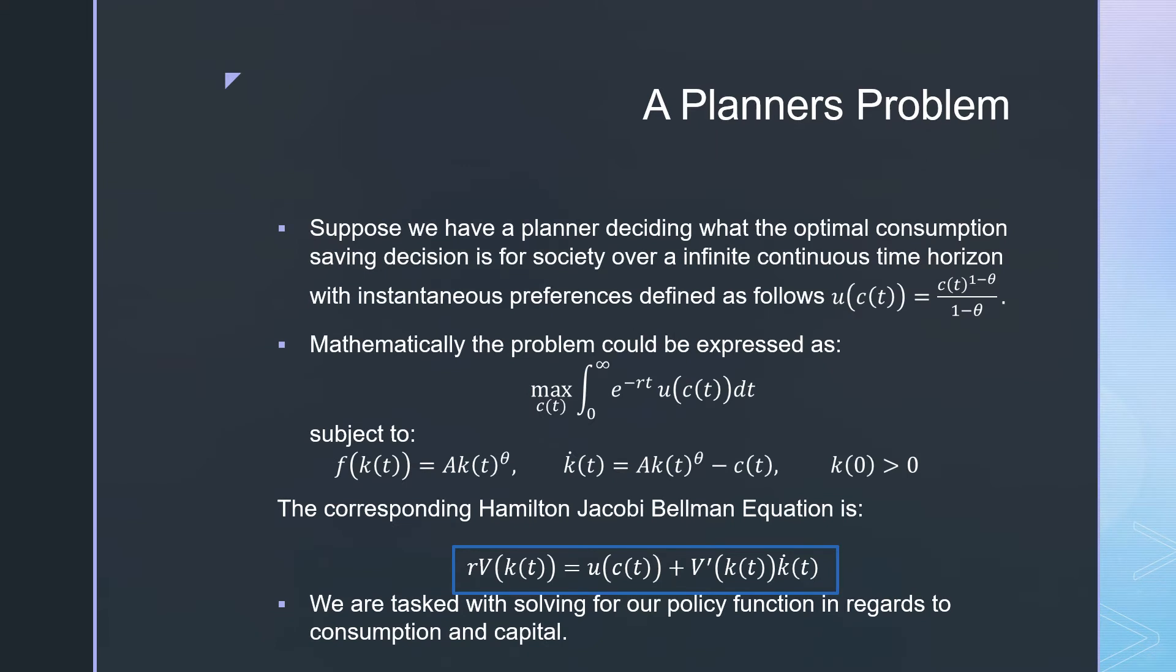Suppose we have a planner deciding on the optimal consumption savings decision for a society over an infinite continuous time horizon with instantaneous preferences denoted by the CRRA type. Mathematically speaking, the problem is expressed as maximizing an infinite sum of discounted utilities at each moment where our choice variable is a specific consumption bundle at moment t,